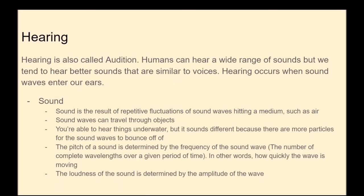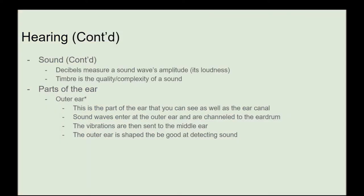Now we get into hearing, also called audition. Humans can hear a wide range of sound, but we tend to hear sounds similar to voices better. Hearing occurs when a sound wave enters our ears. Sound is the result of repetitive fluctuations of sound waves hitting a medium such as air. Sound waves can travel through objects, and you can even hear things underwater, though it sounds different because there are more particles for the waves to bounce off. The pitch of a sound is determined by the frequency of the sound wave — how quickly the wave is moving. The loudness is determined by the amplitude of the wave. Sound is measured in decibels, and timbre is the quality or complexity of a sound.